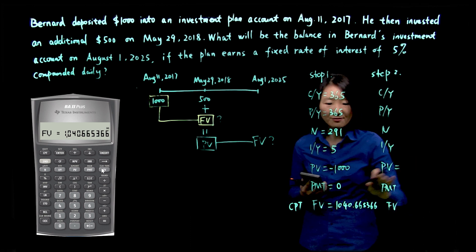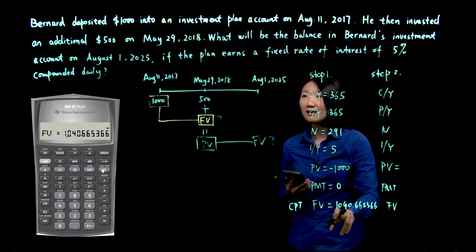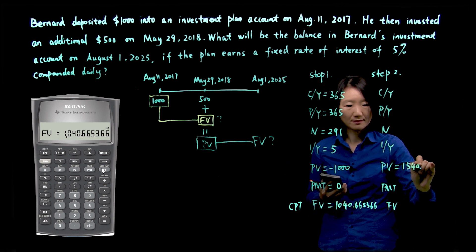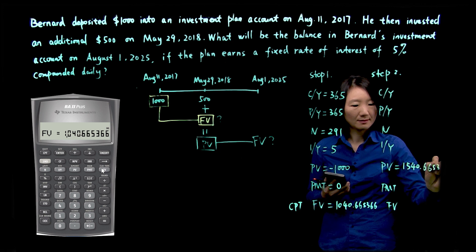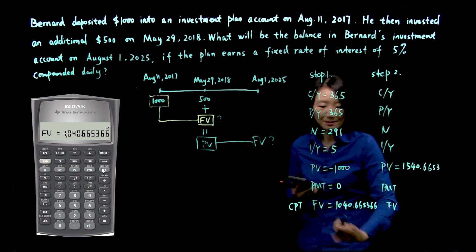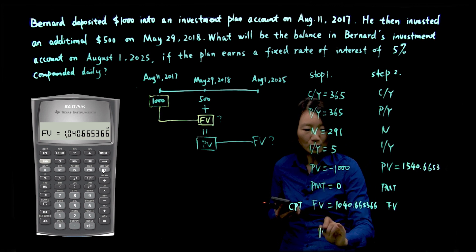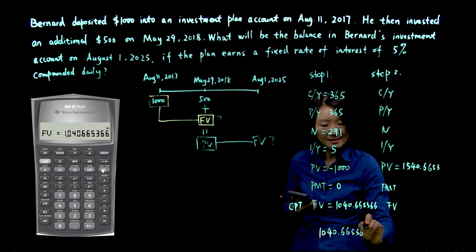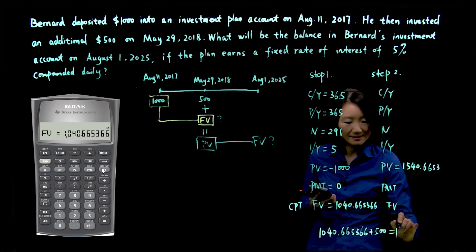So we know the PV is this number plus $500. I'll write down where this number comes from at the bottom.